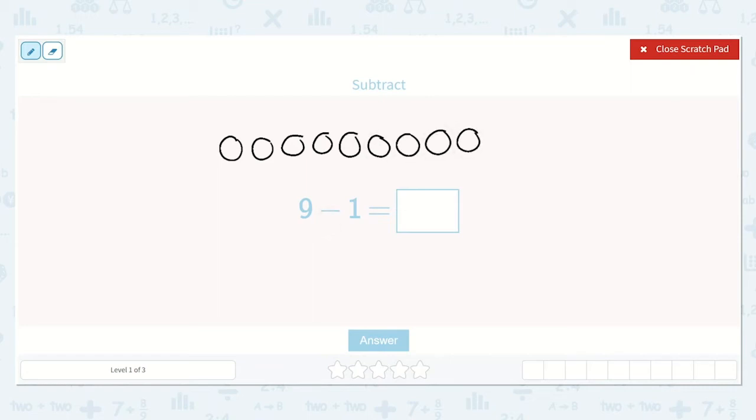and we can subtract or take away one of them. How many do we have left? 1, 2, 3, 4, 5, 6, 7, 8. So 9 minus 1 is equal to 8.